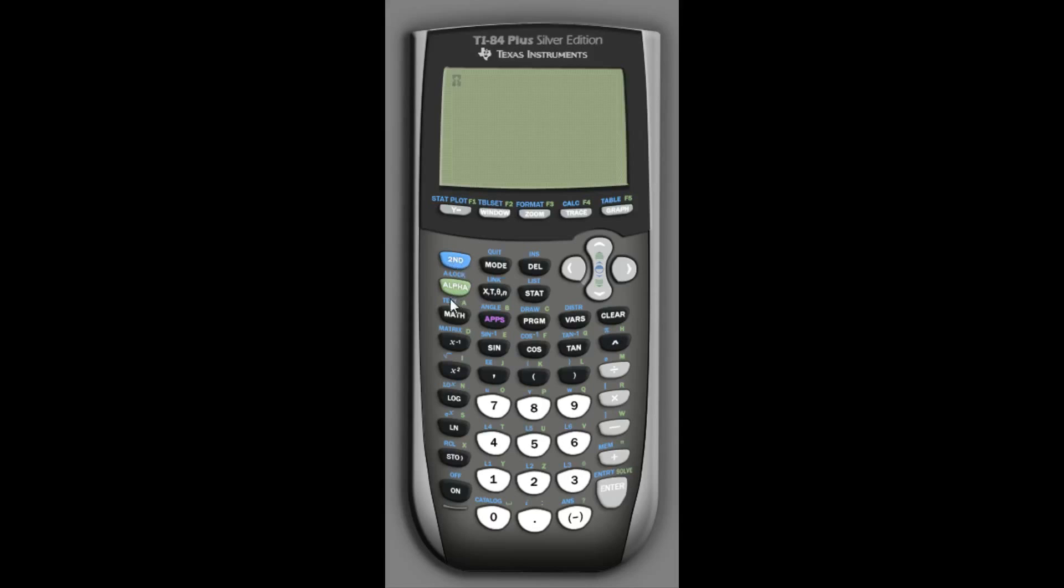So let's pull up matrix C, one of the matrices we entered earlier. C is a 2 by 2 matrix. It looks like this.